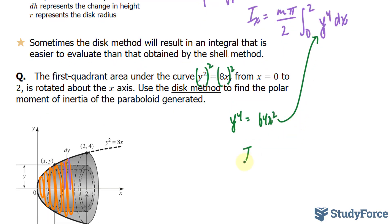Giving me I subscript x, m times pi over 2 times the integral between 0 and 2, for 64x squared dx.